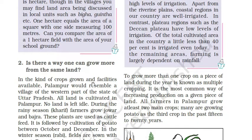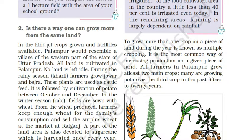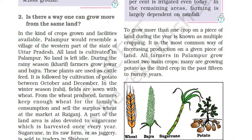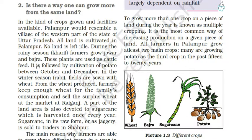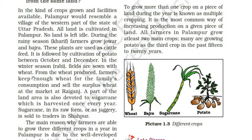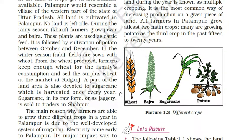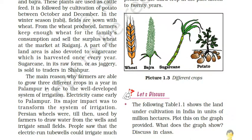Is there a way one can grow more from the same land? In Palampur, which resembles a village in the western part of Uttar Pradesh, all land is cultivated and no land is left idle. During the rainy season (Kharif), farmers grow jowar and bajra used as cattle feed. It is followed by potato cultivation between October and December. In the winter season (Rabi), fields are sown with wheat. A part of the land is also devoted to sugarcane, harvested once a year. Farmers grow three different crops because of Palampur's well-developed system of irrigation.